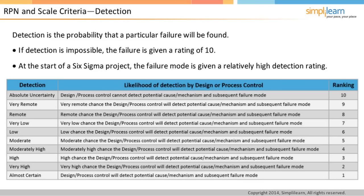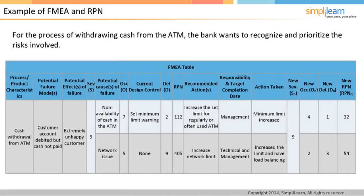In this example, a bank wants to recognize and prioritize risks in the process of withdrawing cash from an ATM. From the table, not having a control in place for network issues has the highest RPN, due to very low detectability for network issues. The next set of information in the table shows the actions taken by management to address the failure modes. Following implementation, the new RPN is calculated, retaining the severity level at 9 since actions were directed at causes of failure, not reducing severity. The new RPN is much lower, and the risk for both causes has been mitigated.